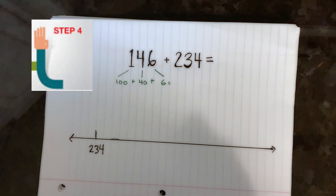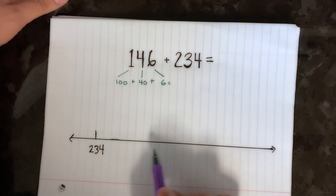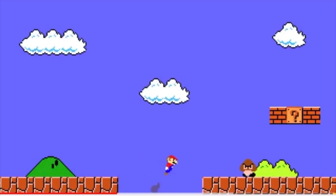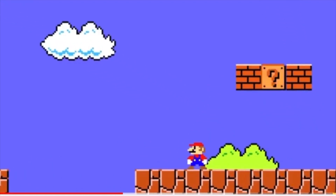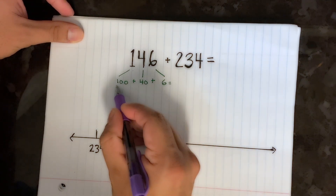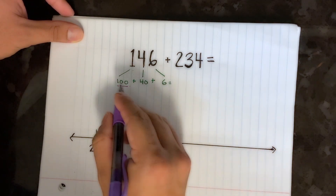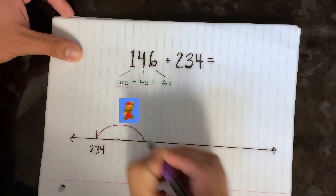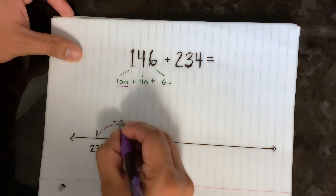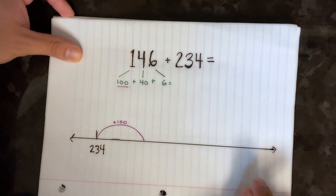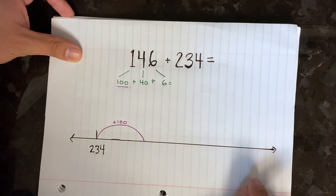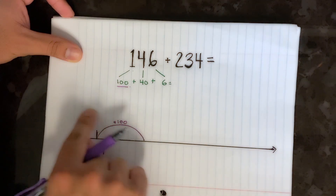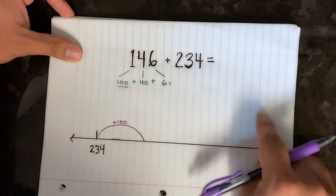All right, now we're ready for step four. For step four you're going to go back to your number line and we are going to jump across it by each place value. Let's first start with the hundred — we're going to jump up a hundred more on our number line. Remember, as we go this way on the number line we're getting larger, and as we go the other way we're getting smaller.